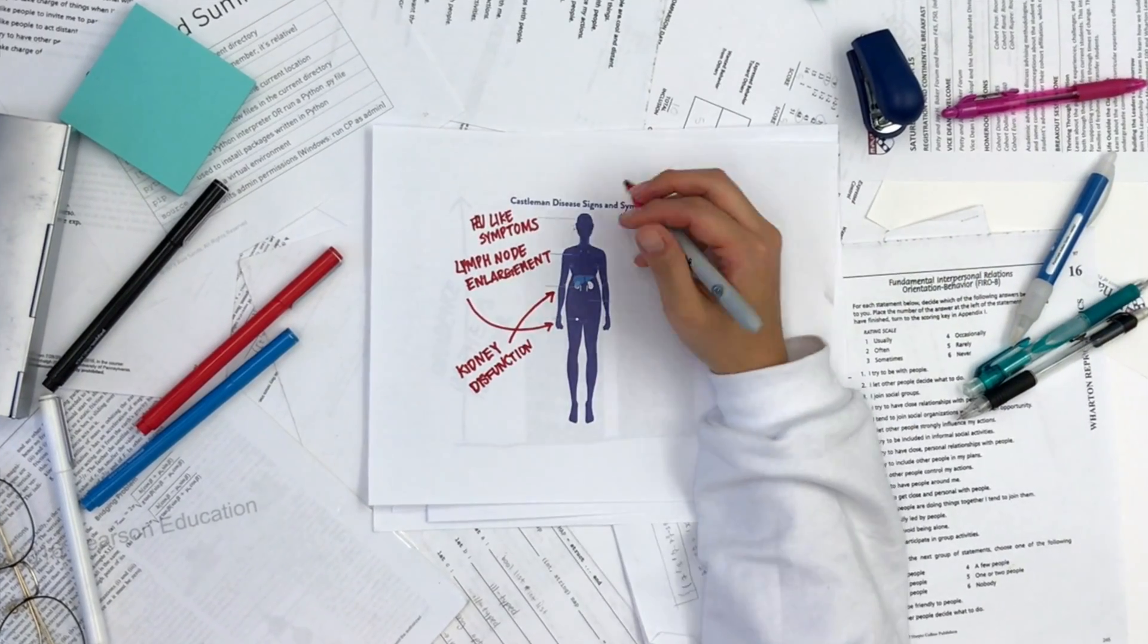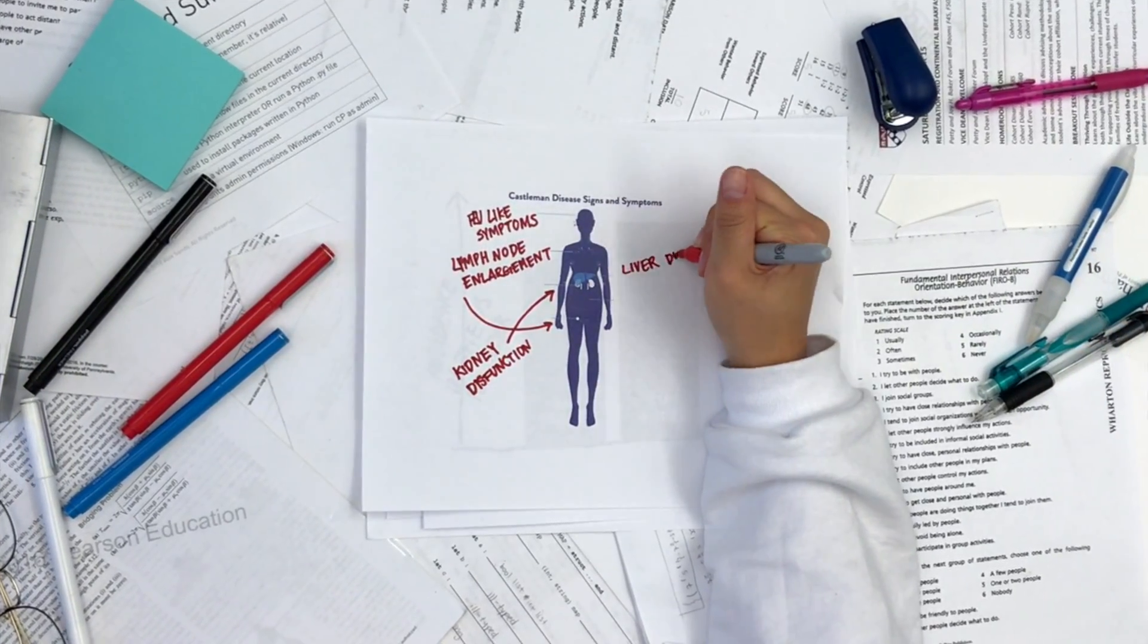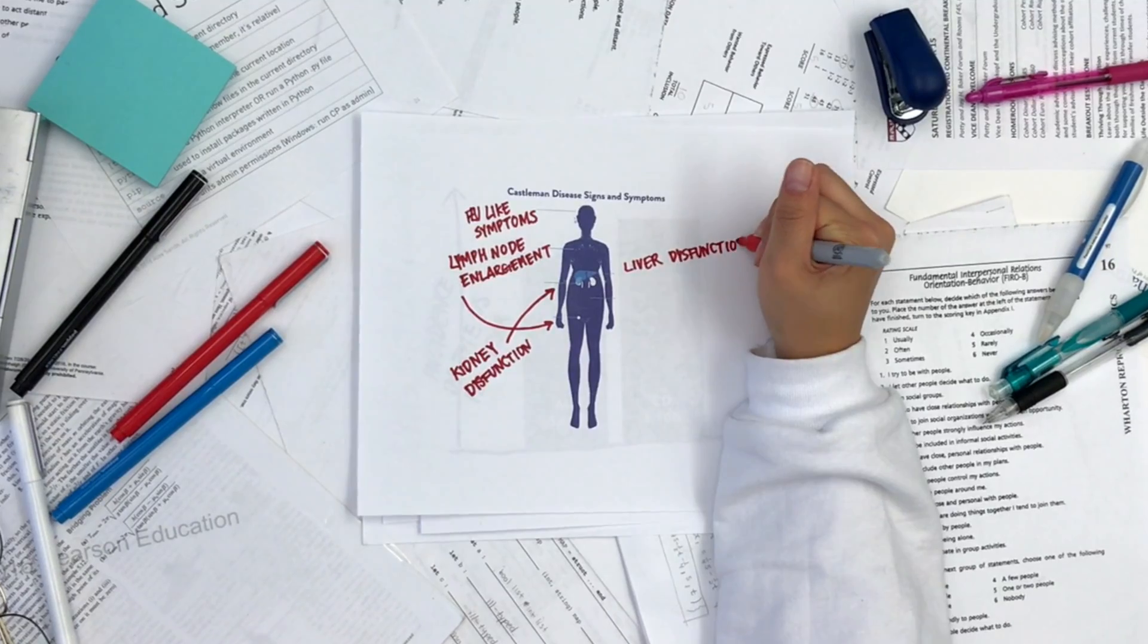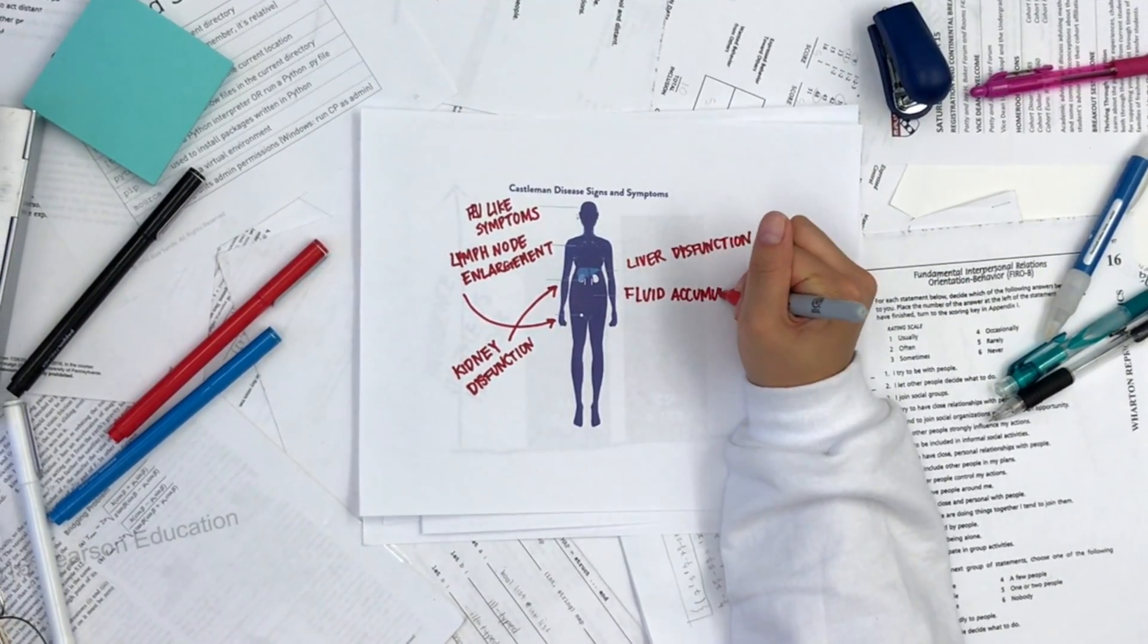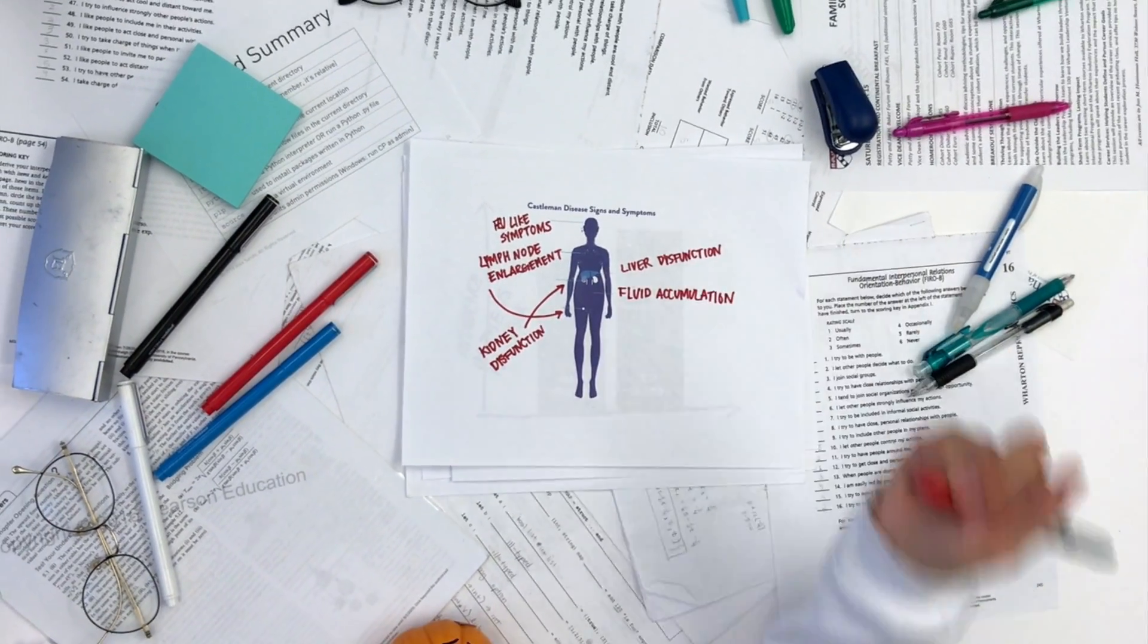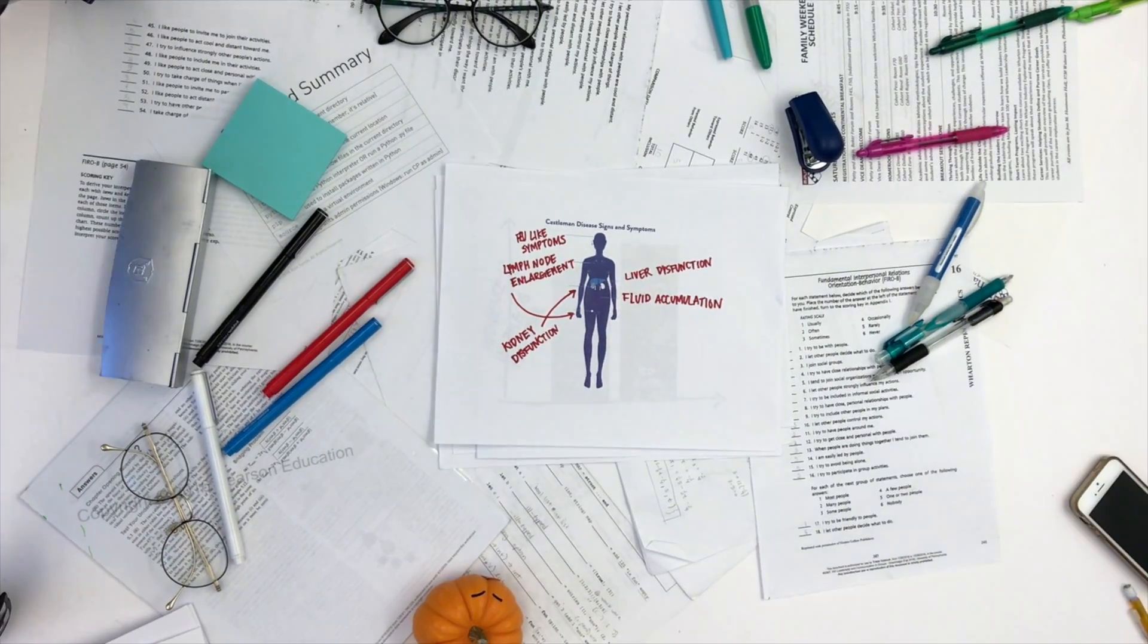Some can also experience kidney and liver dysfunction. And in one common case, a Castleman disease patient can have 70 pounds of fluid removed from their body. One of the reasons Castleman disease is so deadly is because it is poorly understood.